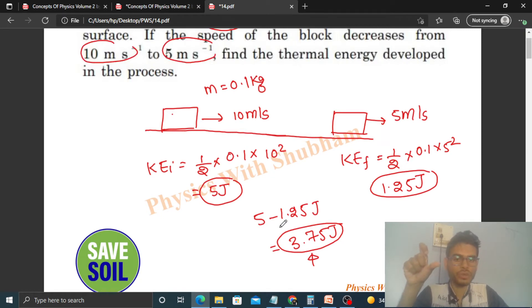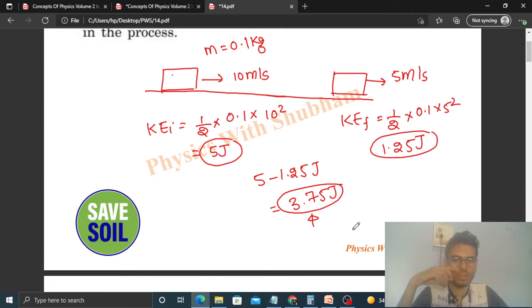As much kinetic energy decreased, that much thermal energy will be generated and developed, because by conservation of energy you can say that energy can neither be created nor destroyed. It can only be transformed from one form of energy to another form.